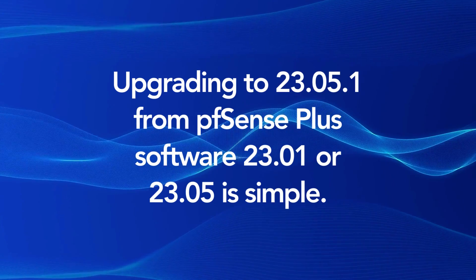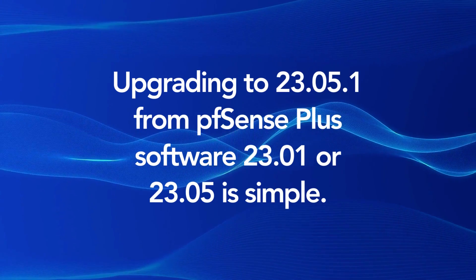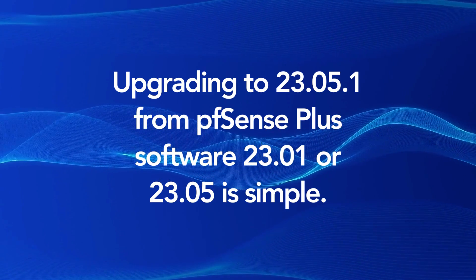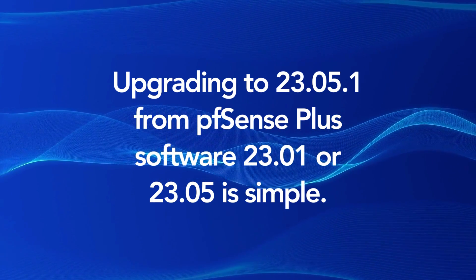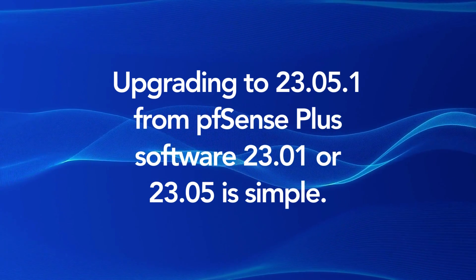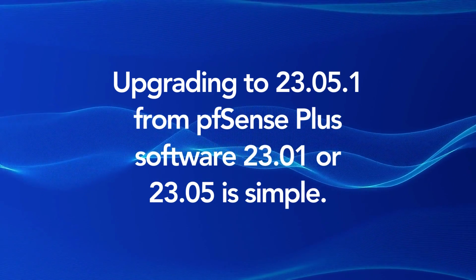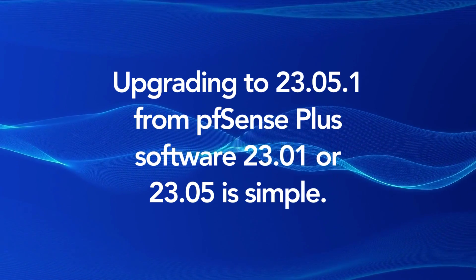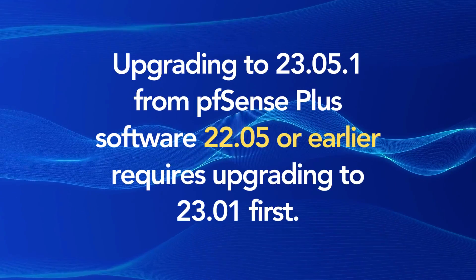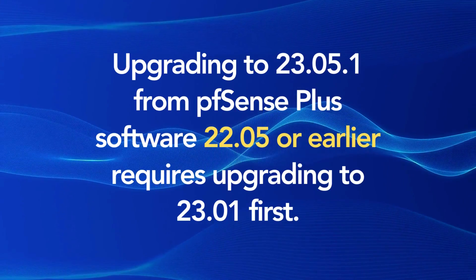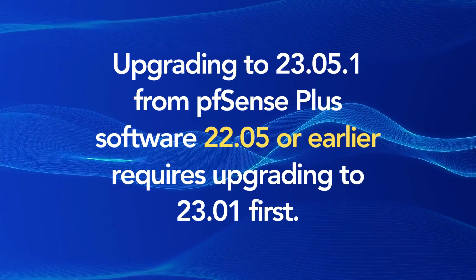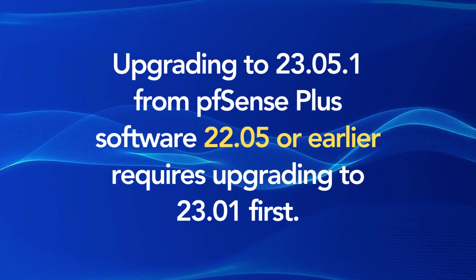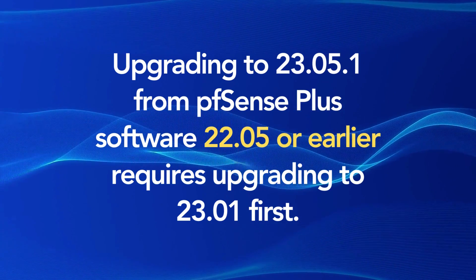If you're on 2301 or 2305, upgrading to 2305.1 is simple — just go to the system drop-down, select update, select the latest version from the drop-down, and upgrade away. If you're on 2205 or earlier, you will need to upgrade to 2301 first before upgrading to any version after it.